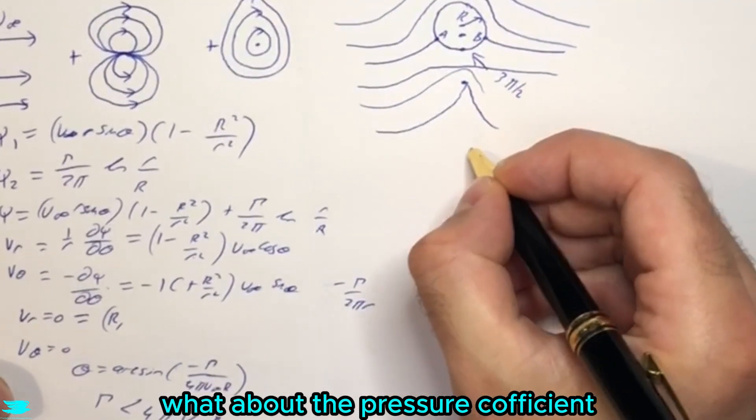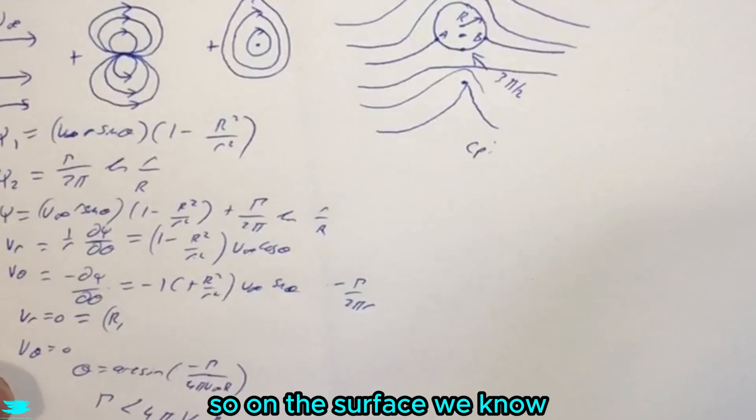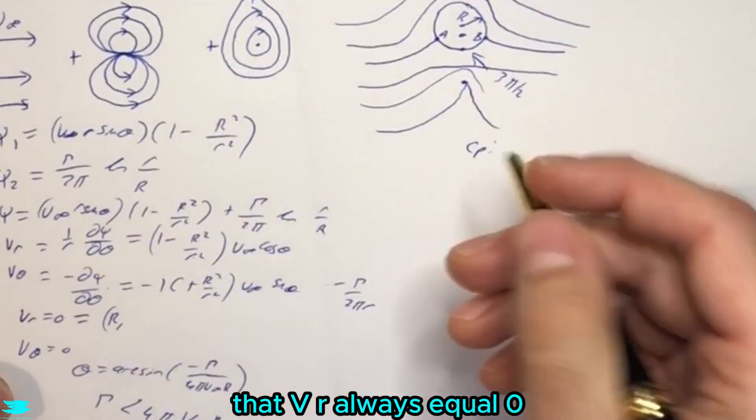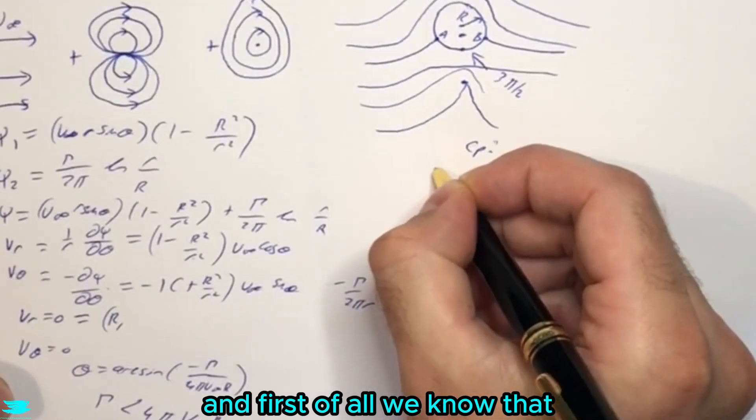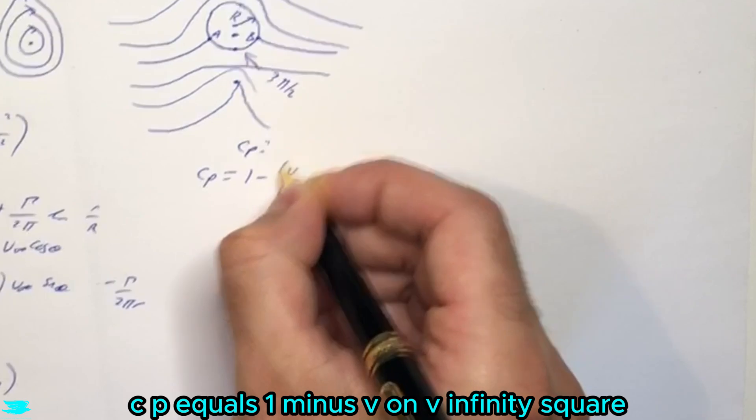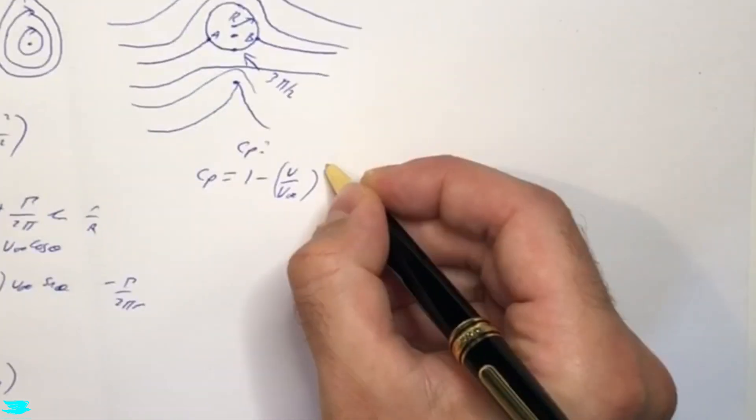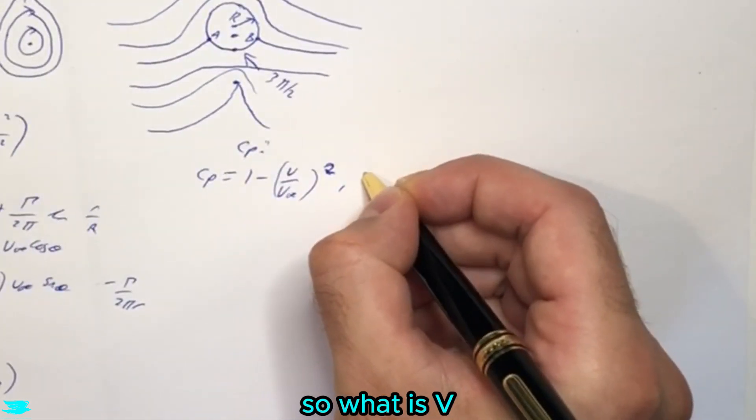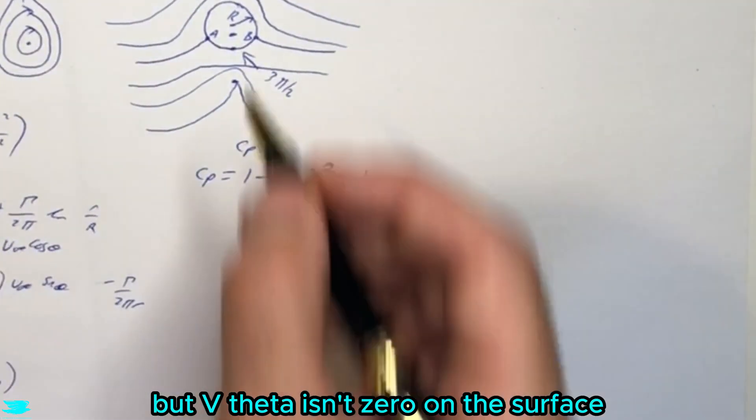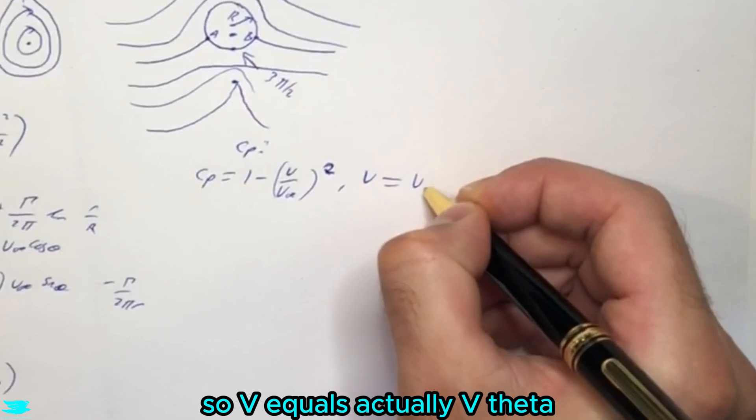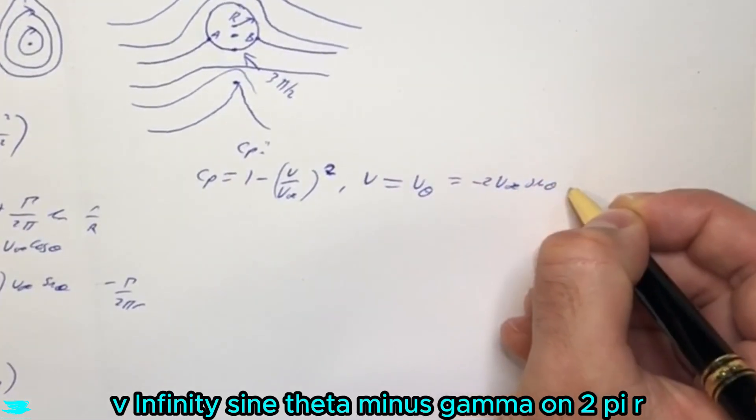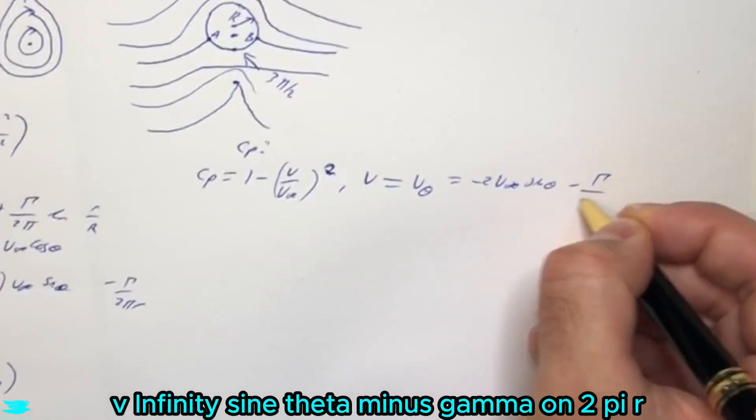So that is the stagnation points. What about the pressure coefficient, Cp, on this surface? So on the surface, we know that vr will always equal 0. And first of all, we know that for compressible flows, Cp equals 1 minus v on v infinity squared. But that's a 2 there. So what is v? v we know is vr is 0, but v theta isn't 0 on the surface. So v equals actually v theta, which equals minus 2 v infinity sine theta minus gamma on 2 pi r.